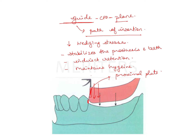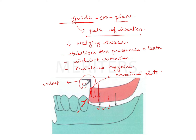The direct retainer or the clasp, the guide plane ensures that the denture goes back in its place and the clasp gets engaged on the tooth in the desired way. This is the retentive terminal and it has to engage the undercut on the tooth, so the guide plane ensures that the RPD comes and sits in its position.